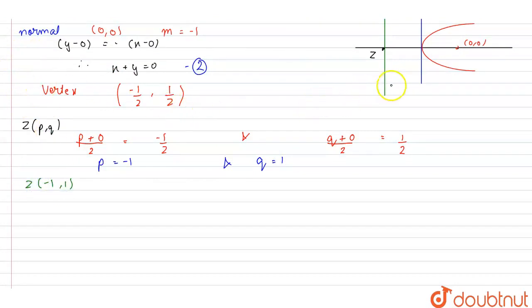Now the directrix is always parallel to the tangent at vertex and the slope of the tangent at vertex is 1. Therefore, the slope of the directrix will also be equal to 1. Since we have a point and the slope of the directrix, we can easily find the equation. Its equation is y - 1 = 1(x + 1), which gives us x - y + 2 = 0.